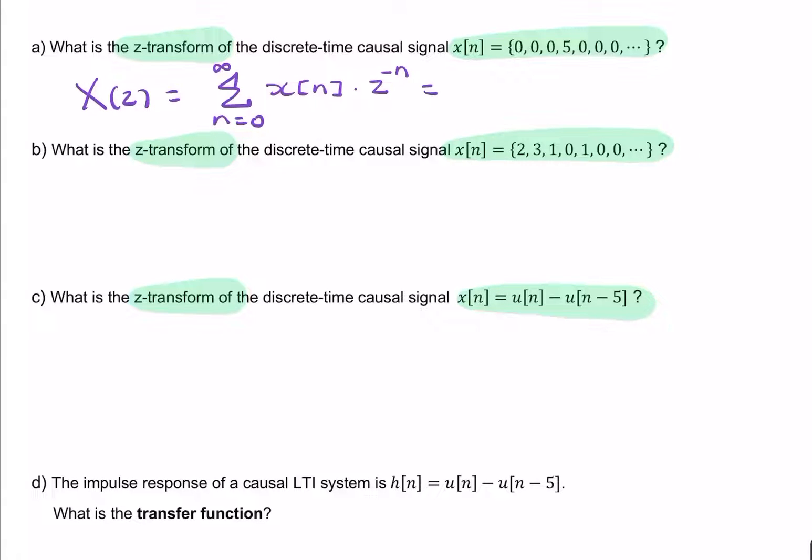So in this case, the first 1, 2, 3 samples are just 0. So it would be 0 plus 0 plus 0, and then the fourth sample would be my 5, so then I'd have 5 times z to the power minus, well, here n would be equal to 0, n equals 1, n equals 2. Here, n would equal to 3. So it's z to the power minus 3. And the remaining terms are all 0. So my z-transform is simply that, 5 times z to the power minus 3.